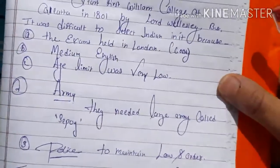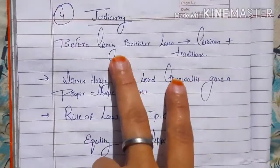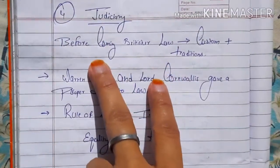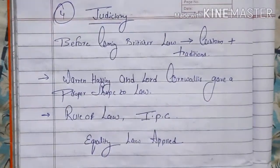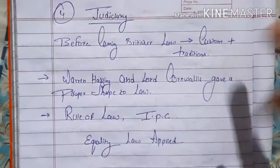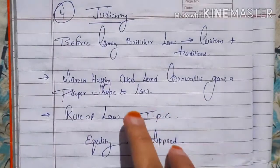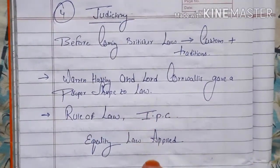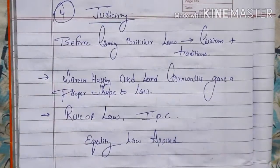The last agency established by the British was the judiciary, with high courts and supreme courts set up. Before British rule, custom and tradition served as the law system. Warren Hastings and Lord Cornwallis gave proper shape to the law system, creating codes like the IPC and introducing a formal legal framework.